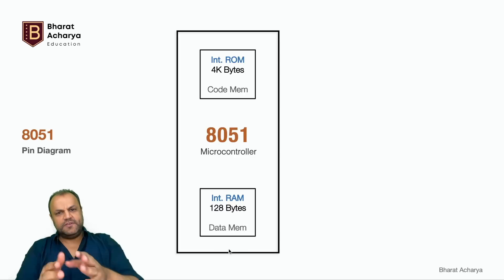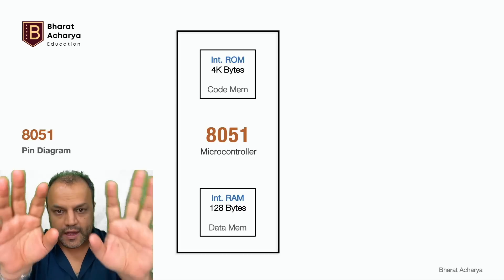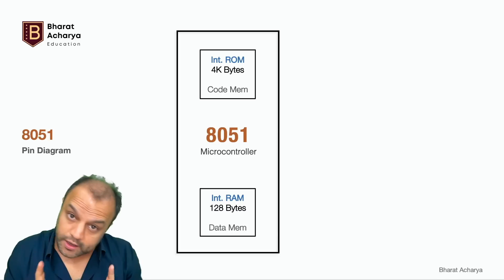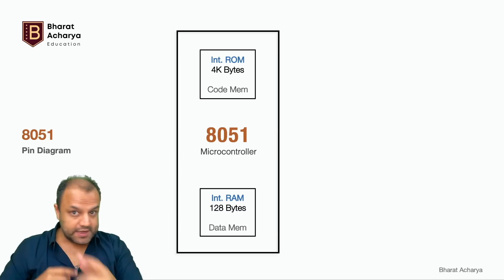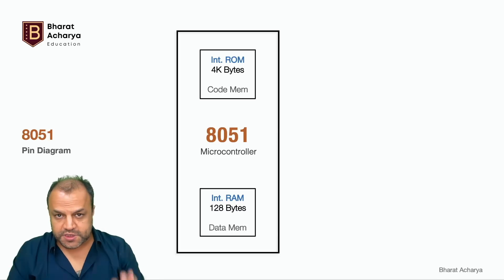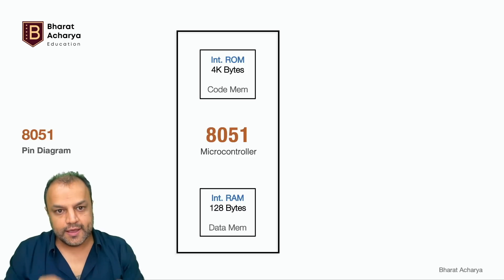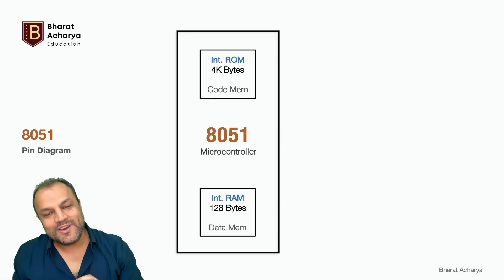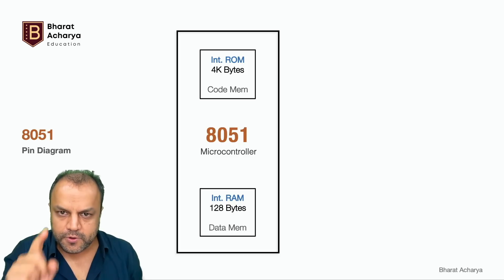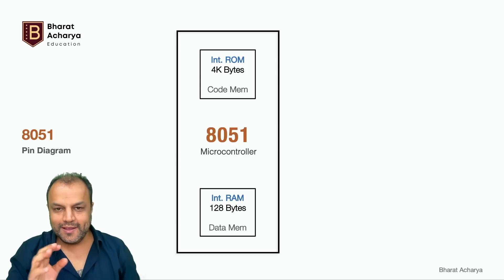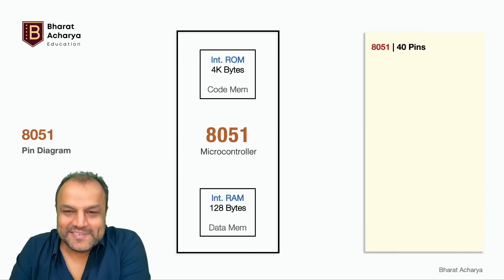Program memory is ROM, used to store programs; data memory is RAM, used to store data. Now let me tell you how this lecture is going to be structured. First I'll show you what these 40 pins are along with their alternate functions — just showing what they are. Then one by one we'll take every pin and learn it in full detail.